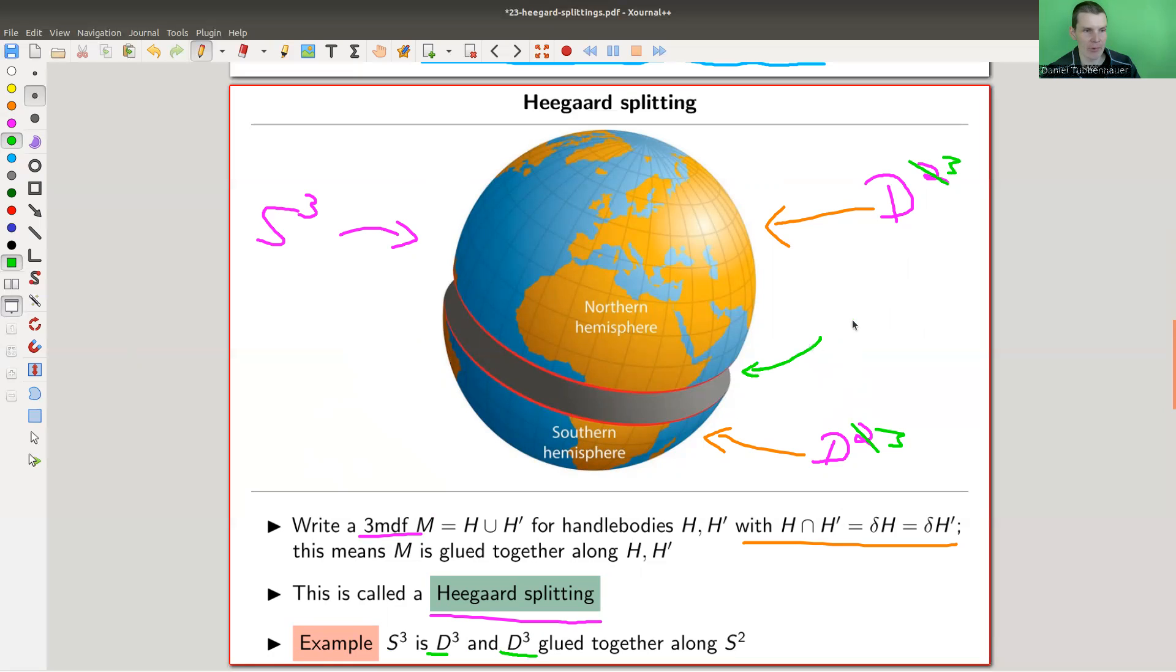And we do exactly the same in three dimensions, it gets a little bit harder to imagine. So we have a D³ here, and we have a D³ here, which is the easiest case of a handle body, namely a handle body with zero handles, and we glue them together along their common boundary. So here, the boundary is an S¹.